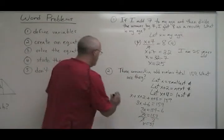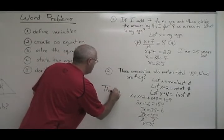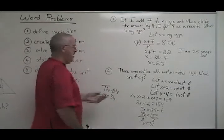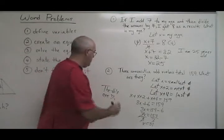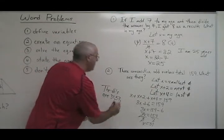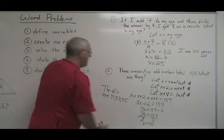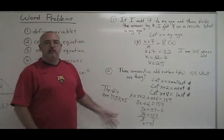Say the answer at the end. The numbers are 51. If you add 2 to 51, you get 53. And if you add 4 to 51, you get 55. There is no unit of measure here because the answer was just a number.